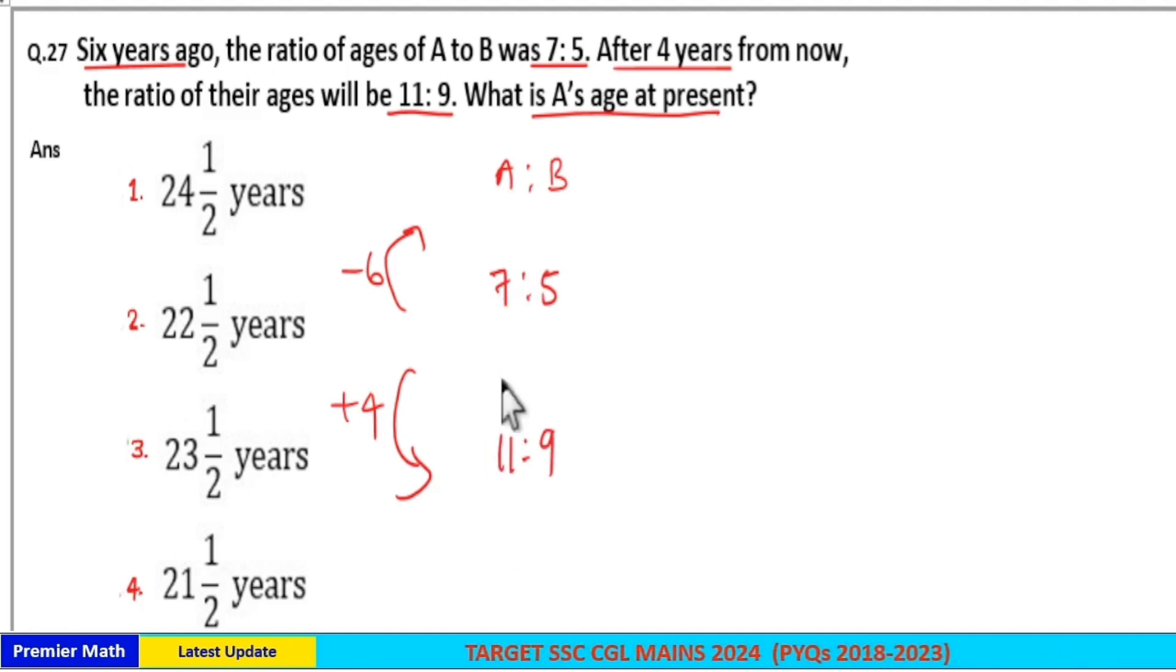Now, if you look at the difference, 7 plus 4 is 11 and 5 plus 4 is 9. So the difference is 4 parts. Difference in ratio is 4 parts. But actual difference is 6 plus 4, which is 10 years. The difference between 6 years ago and 4 years after, the difference in years is equal to 10 years. So this 4 parts is equal to 10 years, which means 1 part is equal to 2.5.